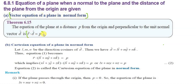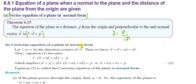The vector equation of the plane in normal form is: r-vector dot d-cap equals p. Here, d-cap is a unit vector, calculated as d-vector divided by the modulus of d-vector. Next, we will see the Cartesian equation of the plane in normal form.